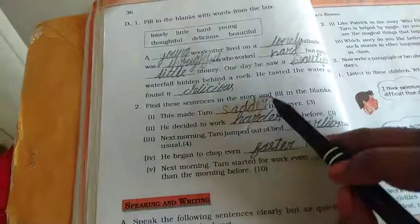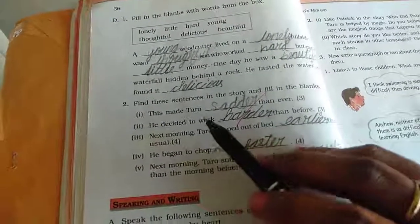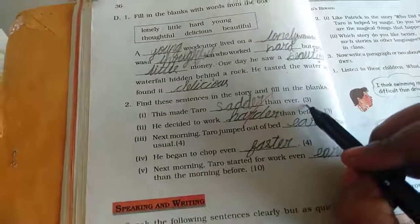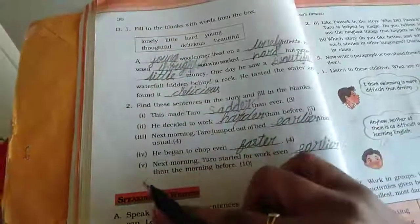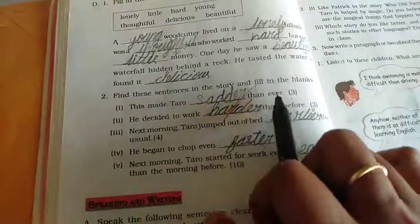Then, find these sentences in the story and fill in the blanks. What are the things the word end with E-R? They have given the message here. The three is the third paragraph. Okay. This made Taru sadder than ever.